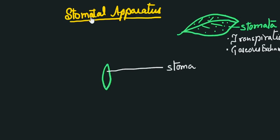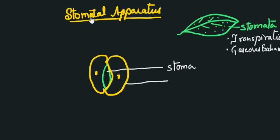Surrounding the stomata are present two bean-shaped cells which are called guard cells, which have their own nucleus. These cells are called guard cells as they help in the opening and closing of the stomata.